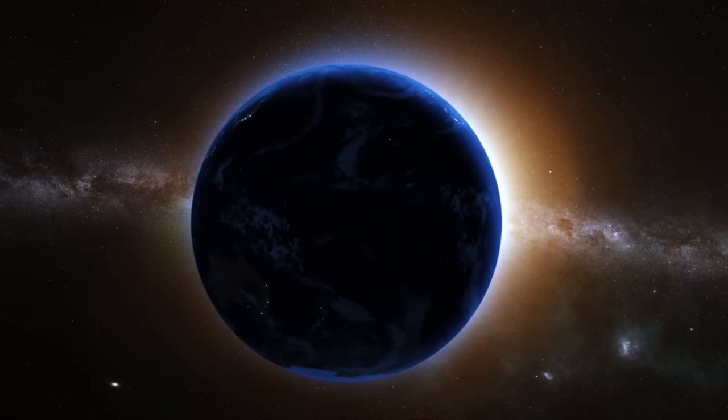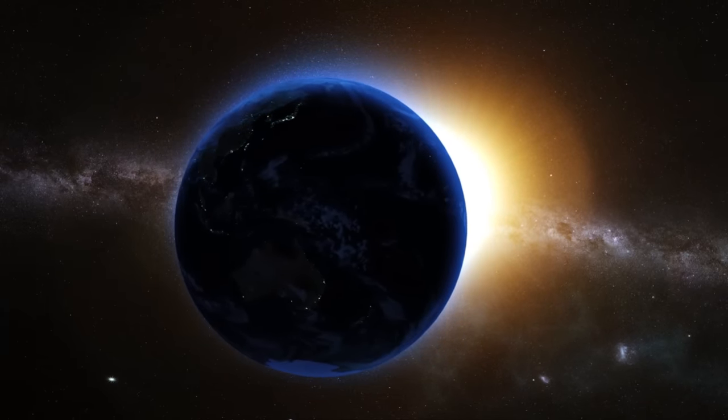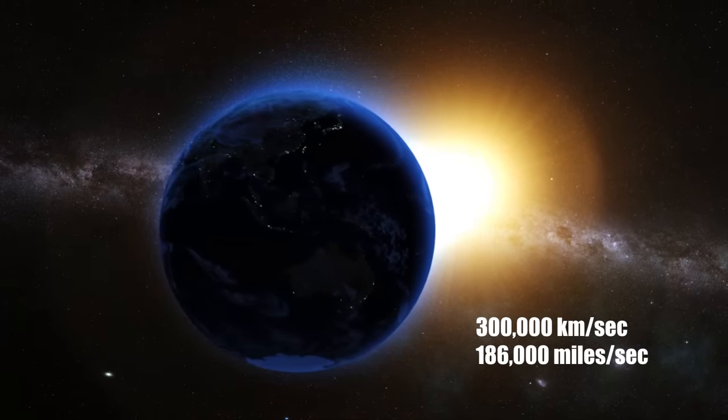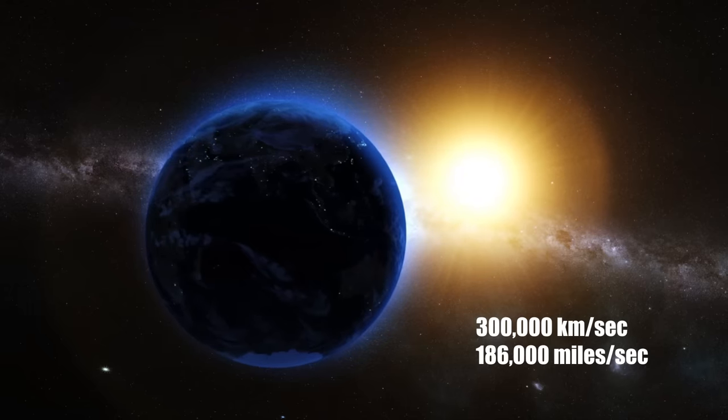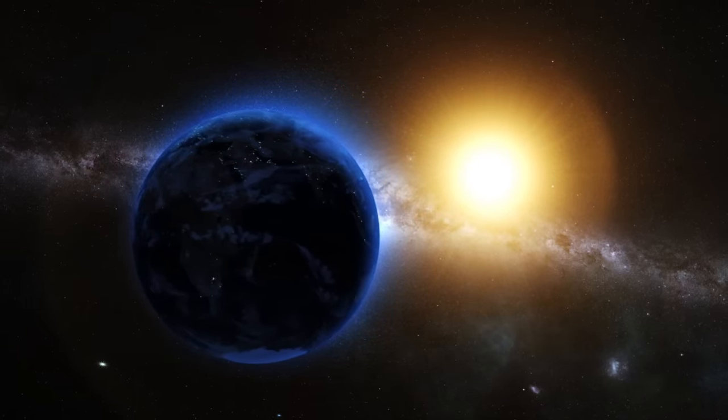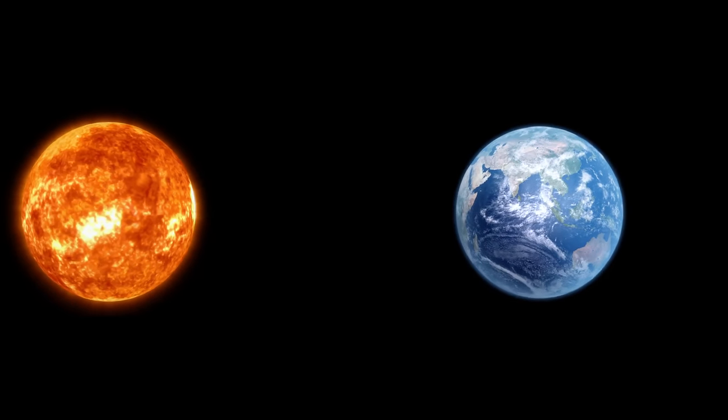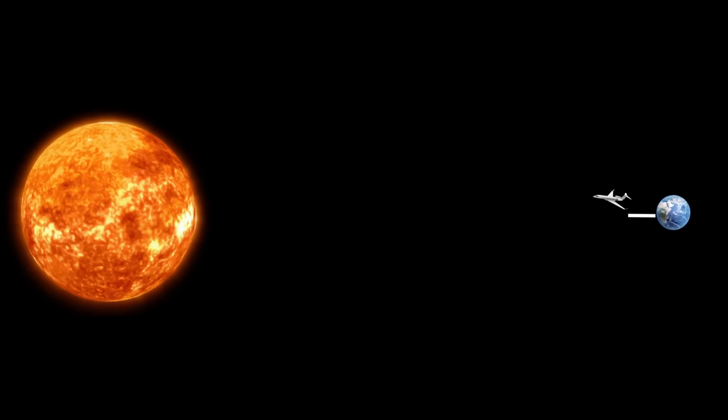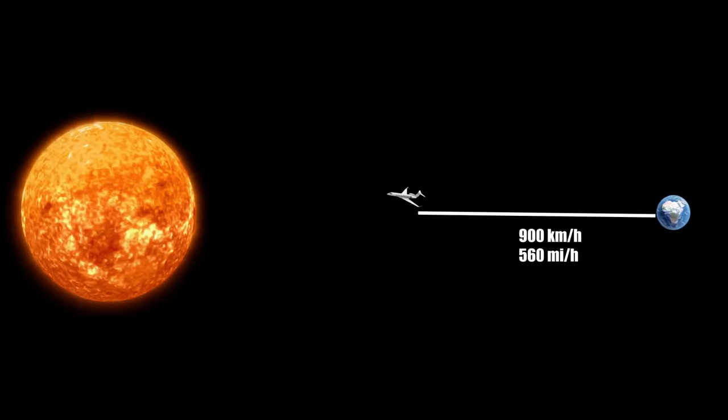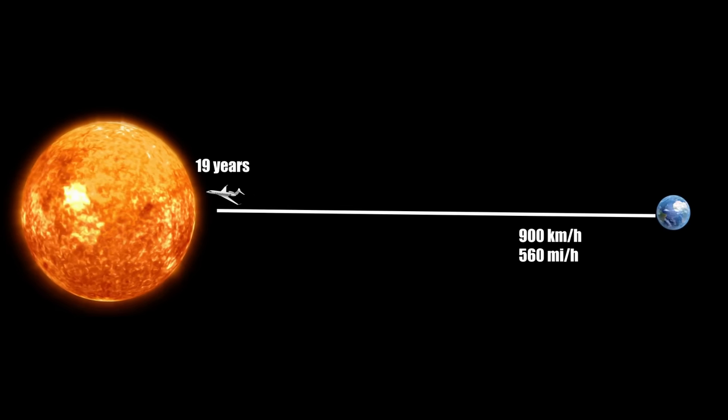Imagine this: light, traveling at an astounding speed of 300,000 kilometers per second, takes about 8 minutes and 20 seconds to journey from the sun to Earth. If you were to travel this distance in a commercial jet, flying at 900 kilometers per hour, it would take you about 19 years.